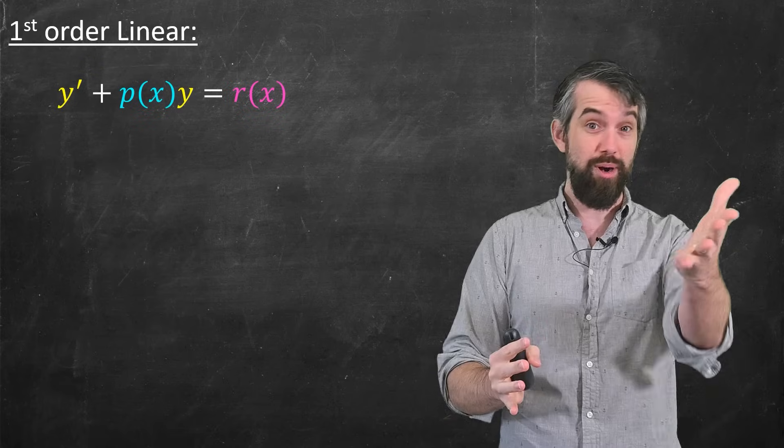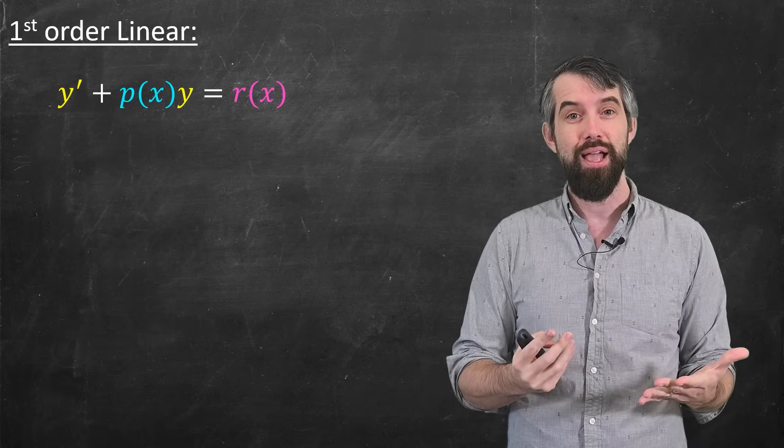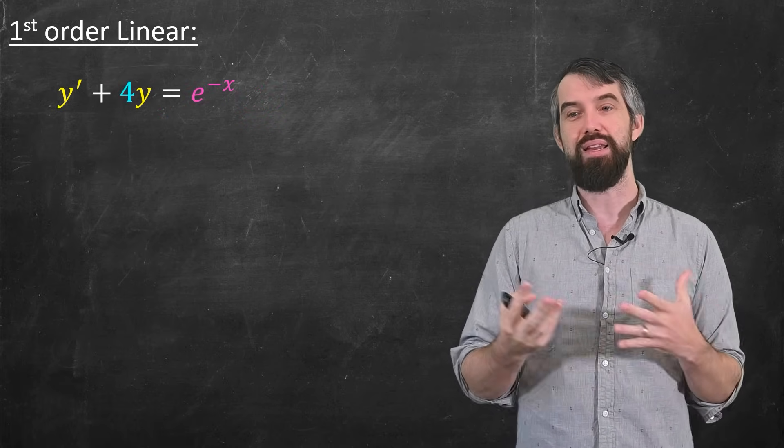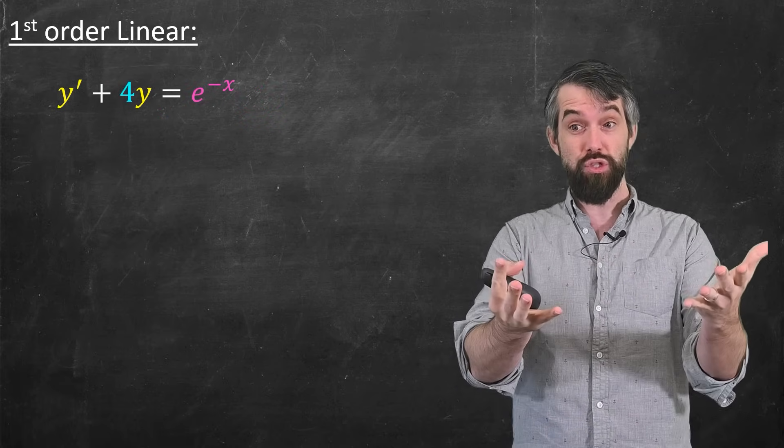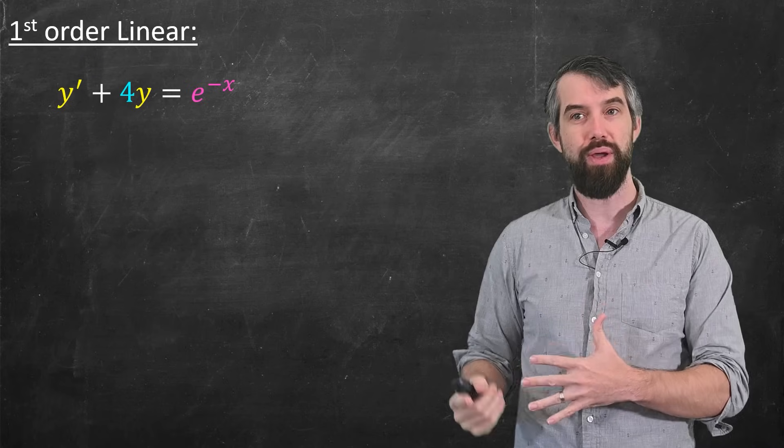Okay, still within first order. Remember, I said we could talk about whether it's a linear equation or not, so this is a first order linear, and an example of that would be something like this, y prime plus 4y is e to the negative x. And it turns out, for first order, we can solve all of these. We can solve all of the linear first order differential equations.